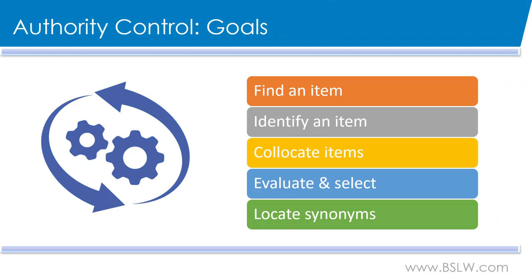Ultimately, authority control helps library staff, but more importantly, it helps the patron experience. By having proper authority control, the patron or staff member can find an item from known information, identify an item with limited information, collocate items using a controlled vocabulary, evaluate and select an item, and locate synonyms to aid in subject searching.